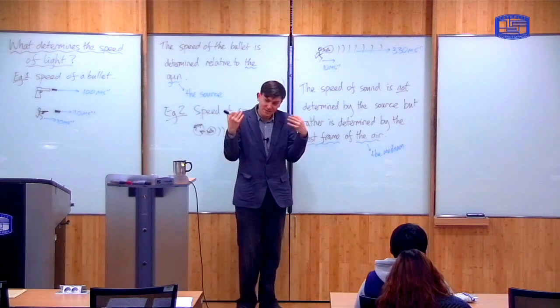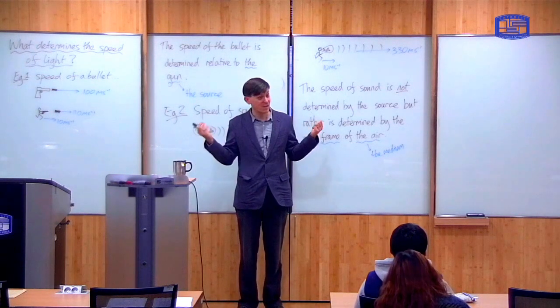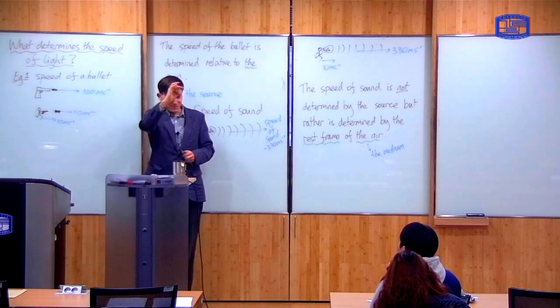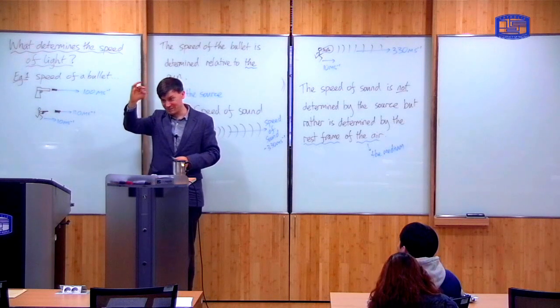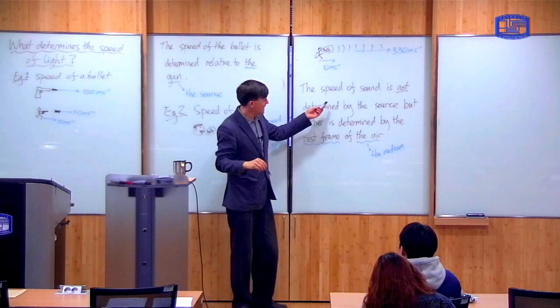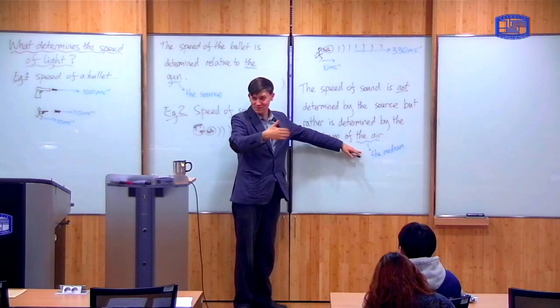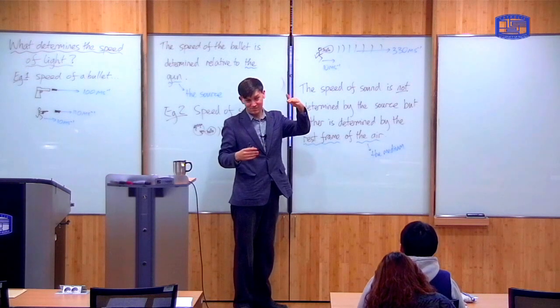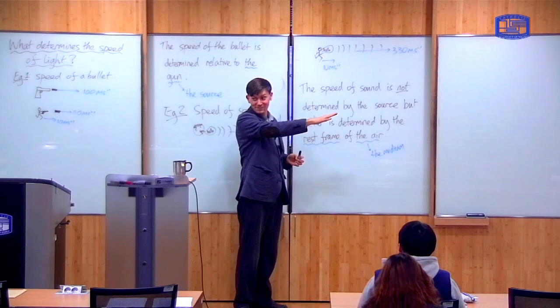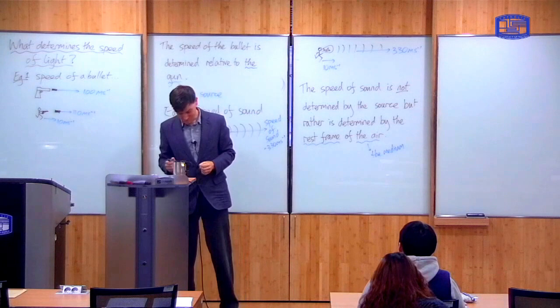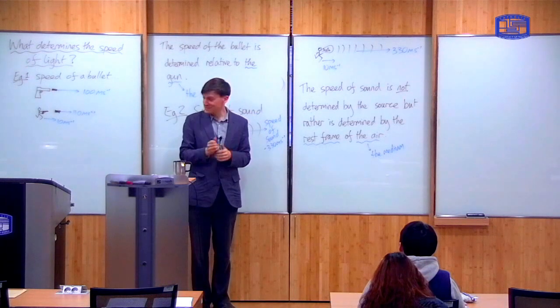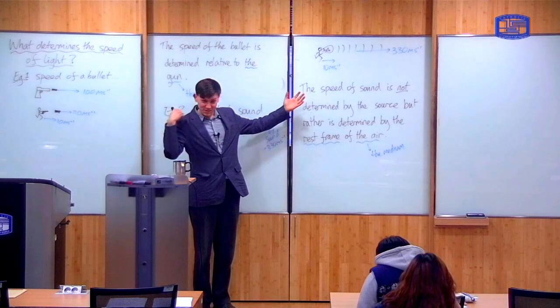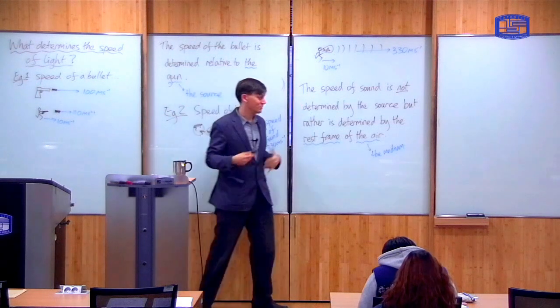So what I want to do now is ask the same kind of question about light. How does light behave? If you look at these two examples, the major difference is that the bullet is a particle, a kind of point object. Whereas sound is a disturbance in a medium. What is sound? Sound is oscillations of pressure in the air. So we can crudely divide these two cases as this is the behavior of particles, the speed is determined by the source. And this is the behavior of wave, the speed is determined by the medium. So we can ask then, what about light?